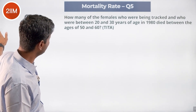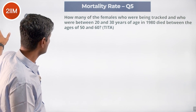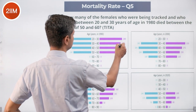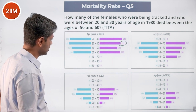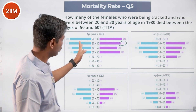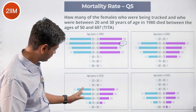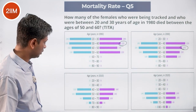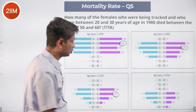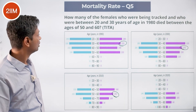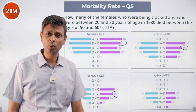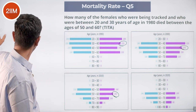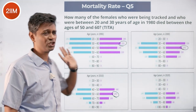How many of the females being tracked who were between 20 and 30 years of age in 1980 died between the ages of 50 and 60? The second bucket — 20 to 30 in 1980. That cohort becomes 30 to 40, then 40 to 50, then 50 to 60. 225 made it to 30 to 40, 175 made it to 40 to 50, then it becomes 145. So they made it to 40 to 50 but not 50 to 60 — 175 minus 145 is 30. Track these numbers and you're through.